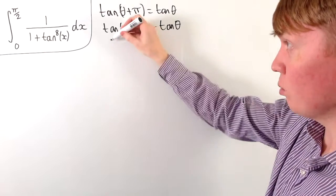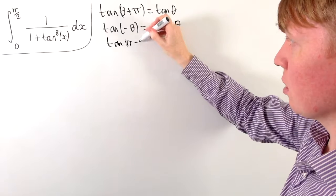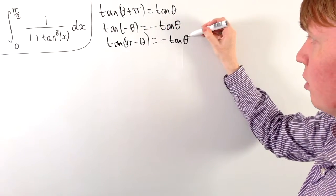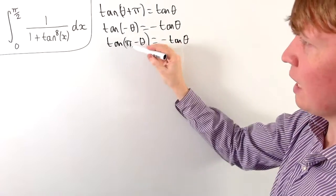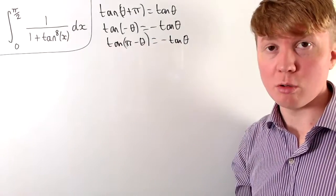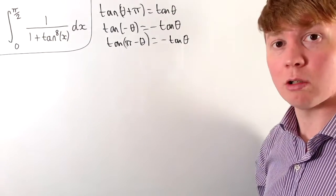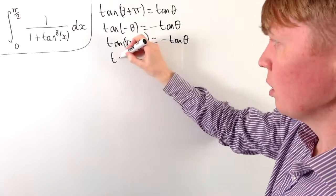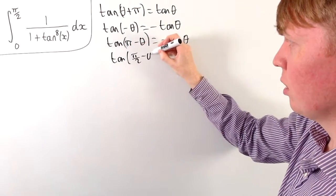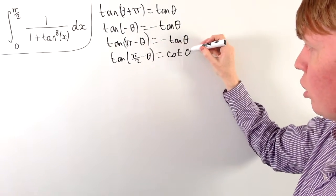Another fact we could take advantage of is that tan(π − θ) is equivalent to −tan(θ). But once again, a substitution would take us outside our range. A similar substitution that would keep us within 0 to π/2 is considering what happens with tan(π/2 − θ), which is actually equivalent to cot(θ).